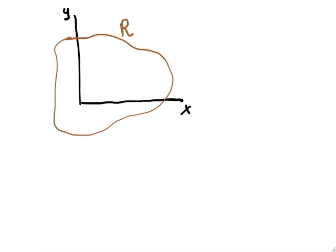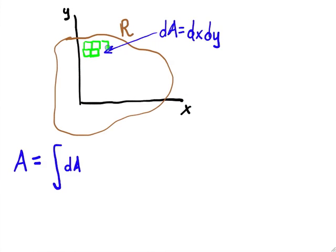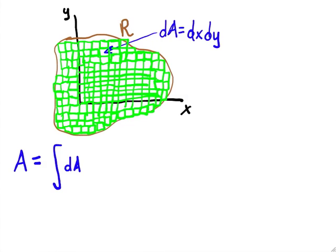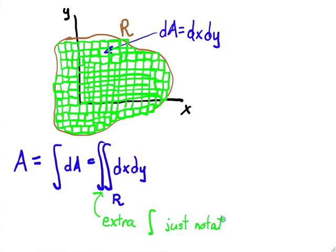Having mastered integration in one dimension, we can move to two. Don't worry, it doesn't get any harder. Our new task is to compute the area of this funny region. We begin with the simple observation that the total area can be written as the sum of many small areas. Each small region is just a box, and the area of a box is its base, dx, times its height, dy. Summing up all these little areas is just doing the integral. Often when there are two variables being integrated, you'll see two integration signs. But that's just notation.